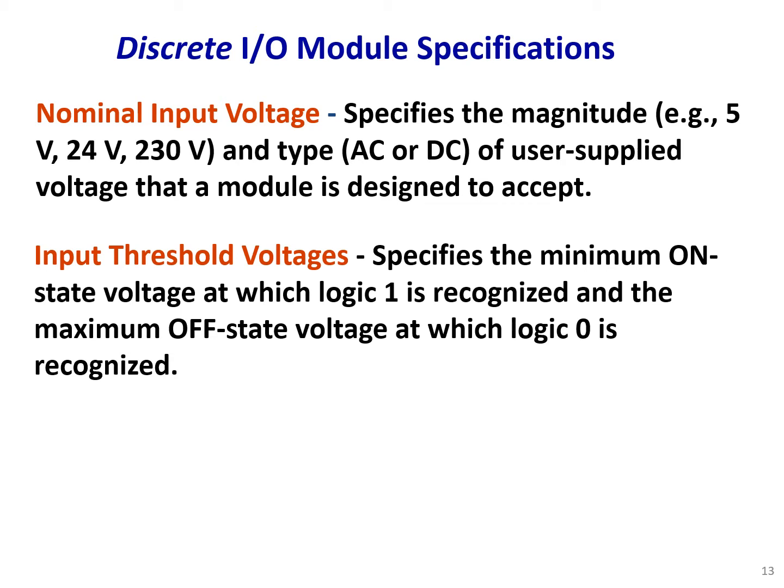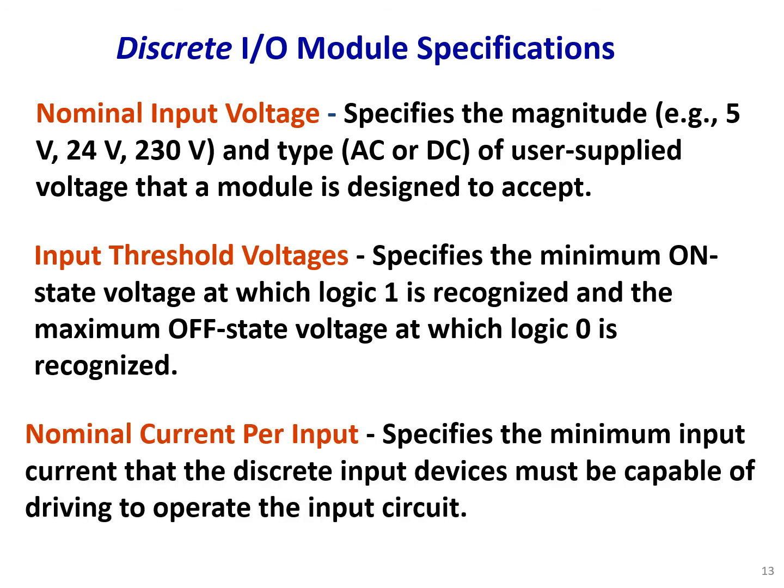Input threshold voltage specifies the minimum on-state voltage at which logic 1 is recognized, and the maximum off-state voltage at which logic 0 is recognized — a range or threshold to translate the input voltage to digital states on or off. Nominal current per input specifies the minimum input current that the discrete input device must be capable of driving to operate the input circuit — basically how much current it draws.